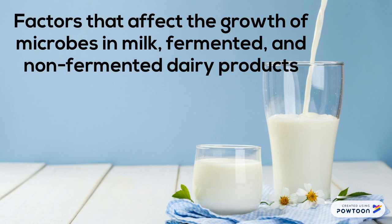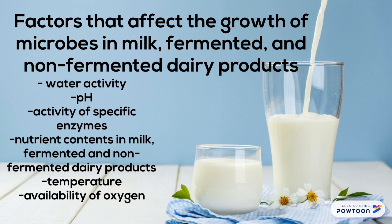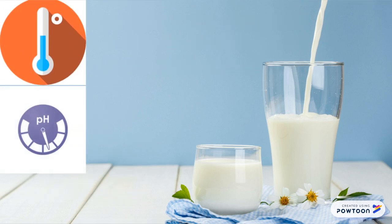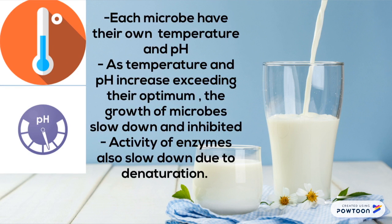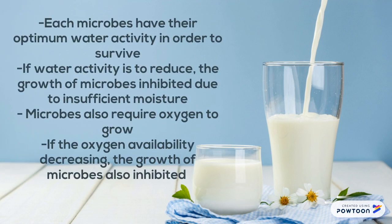The factors that affect the growth of microbes in milk, fermented and non-fermented dairy products include water activity, pH, activity of specific enzymes, nutrient contents, temperature and availability of oxygen. Each microbe has its own optimum temperature and pH. As temperature and pH increase beyond their optimum, the growth of microbes will slow down and be inhibited, and enzyme activity also slows down due to denaturation. Each microbe has an optimum water activity to survive; if water activity is reduced, microbial growth is inhibited due to insufficient moisture. Microbes also require oxygen to grow, and if oxygen availability decreases, microbial growth is also inhibited.